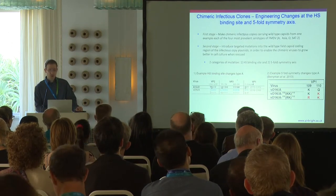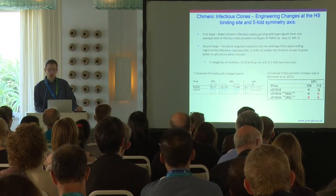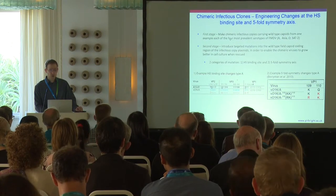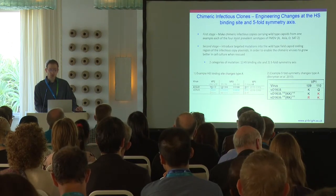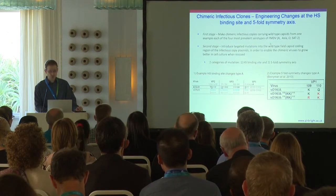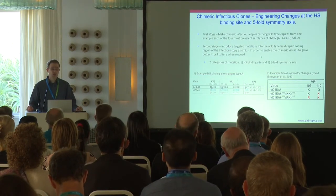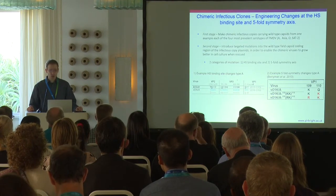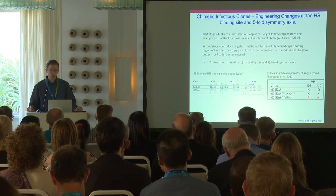The first stage is to make these chimeric infectious clones carrying wild-type capsids. We made one example each of the four most prevalent serotypes of FMDV: A, Asia-1, O, and SAT-2. The second stage was to introduce targeted mutations into the wild-type capsid coding region in order to enable the chimeric viruses to grow better in cell culture when rescued.